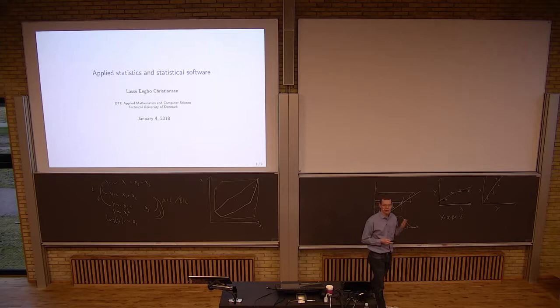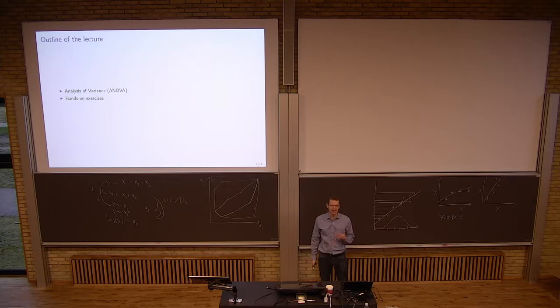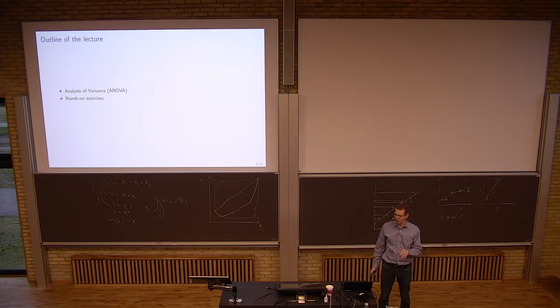Yesterday we spent all the time looking at simple and multiple regression where all the predictors were real numbers. Today we're going to look at analysis of variance where the big difference is that the predictors are now factors or categorical variables. Sometimes they are ordered, sometimes they're not.